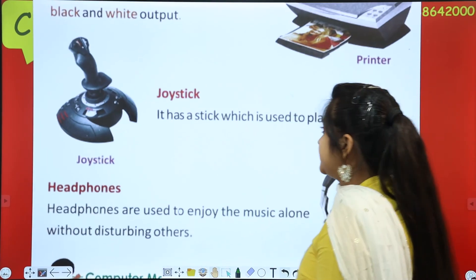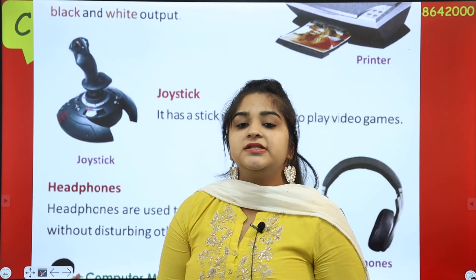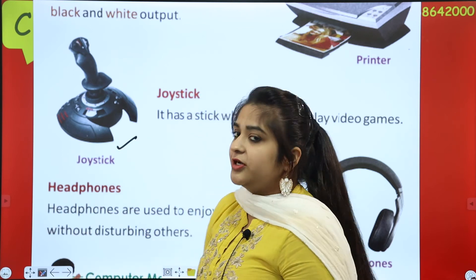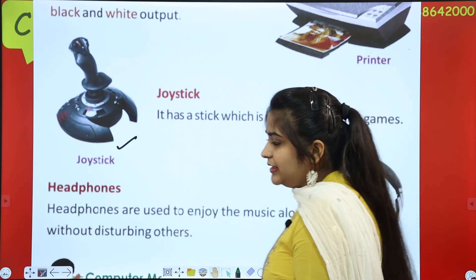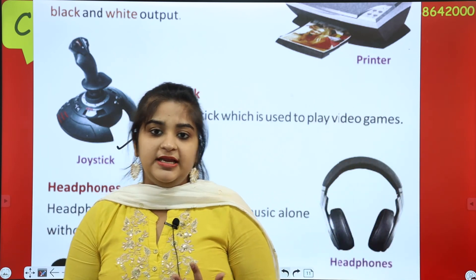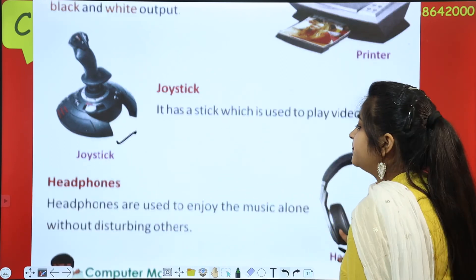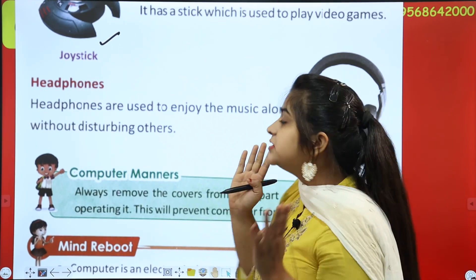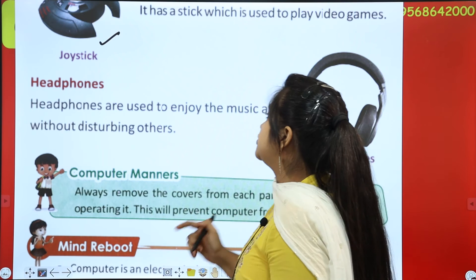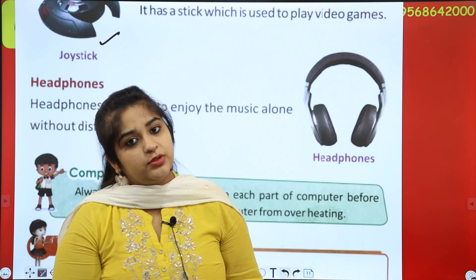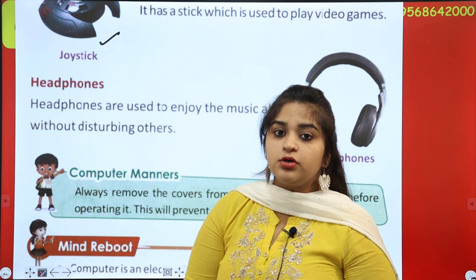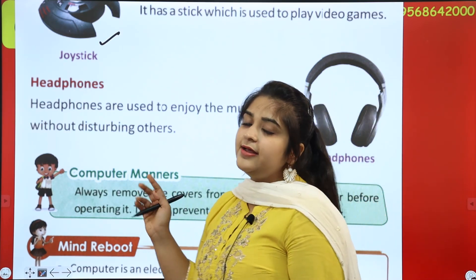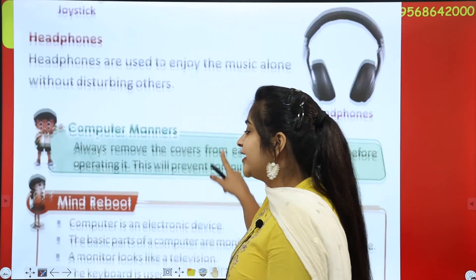Next comes your joystick, which is used to play video games. Then, headphones — these are placed in our ears. Headphones are used to enjoy music alone without disturbing others, so there is no disturbance to people around you.